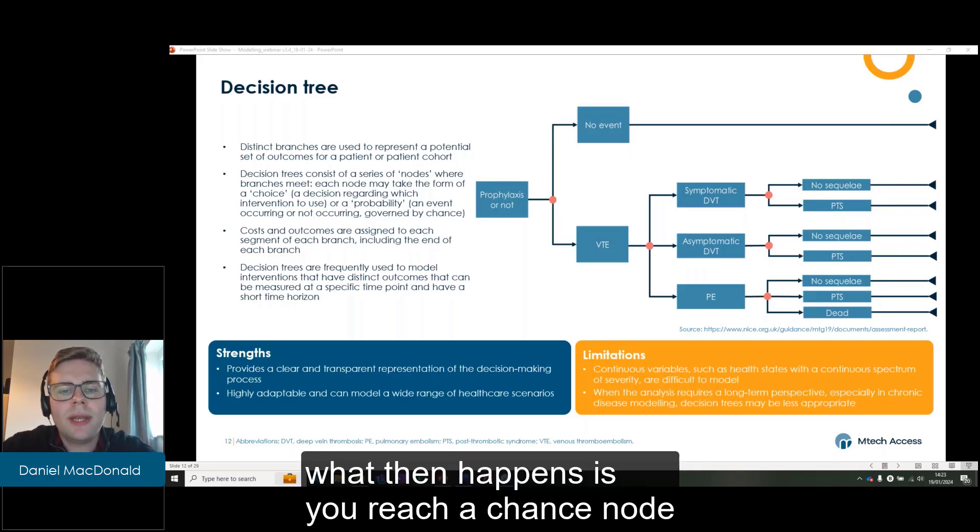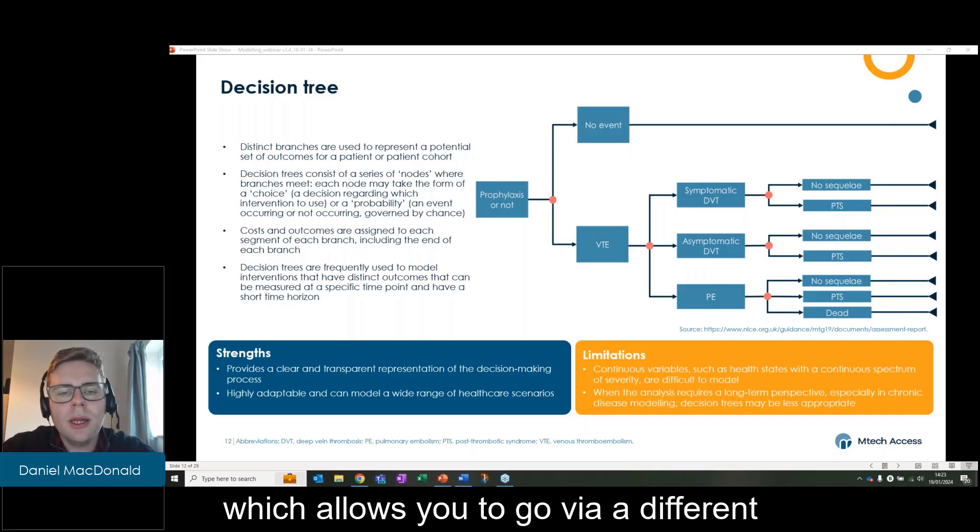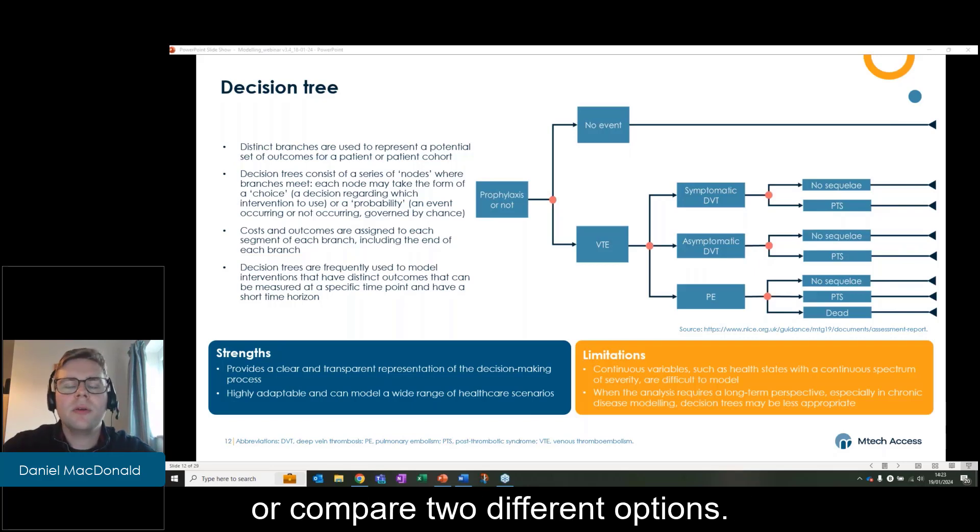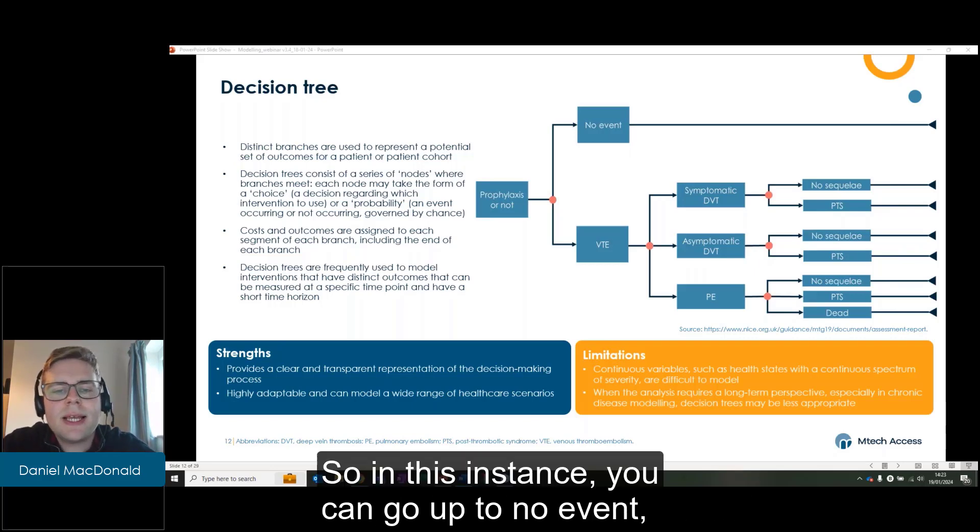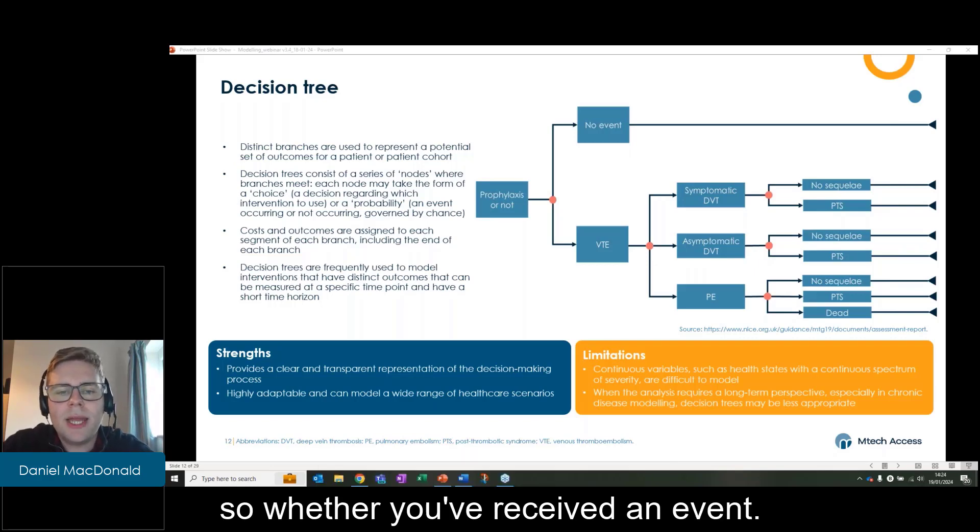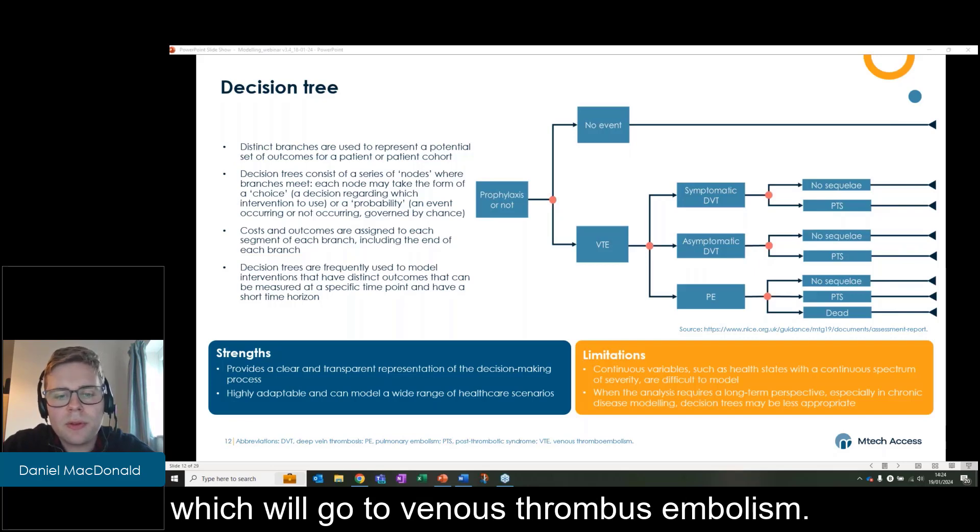With the decision tree, what then happens is you reach a chance node, which allows you to go via different or compare different options. So in this instance, you can go up to no event if you've received an event, or you can go to the other branch, which will go to venous thromboembolism.